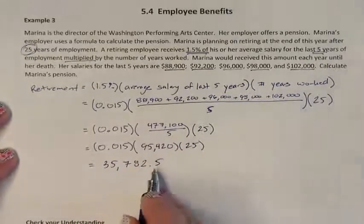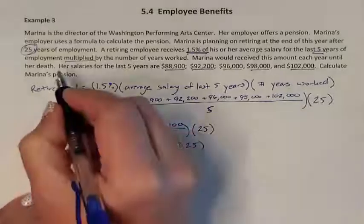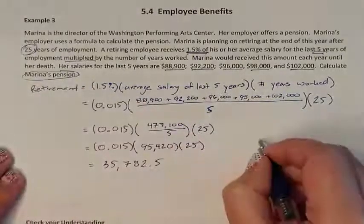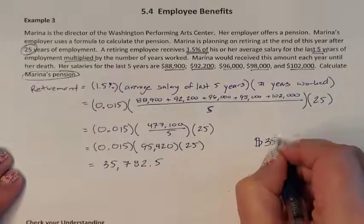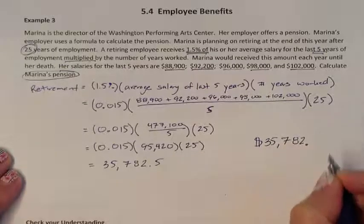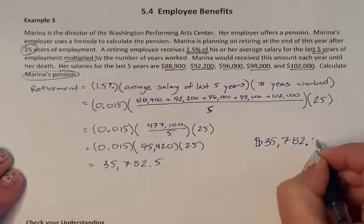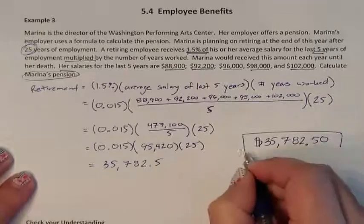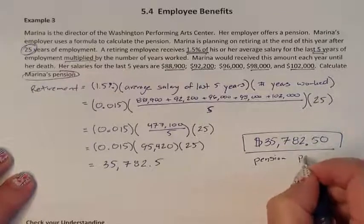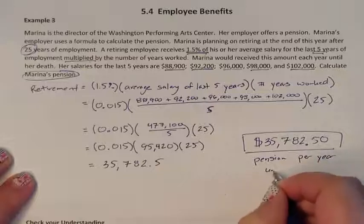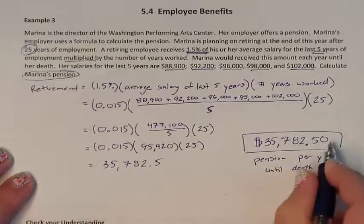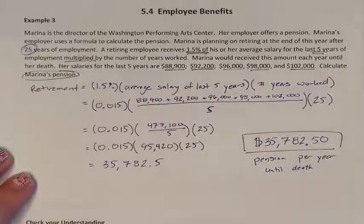Now, what does this mean? It was asking you to calculate her pension — pension is money. So she's going to make $35,782.50. This is her pension per year until death, because that is how pensions work. She will make this amount of money every single year until she dies.